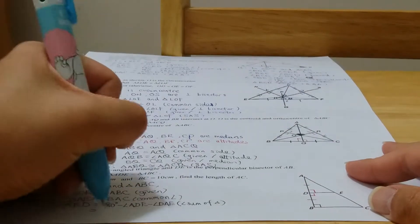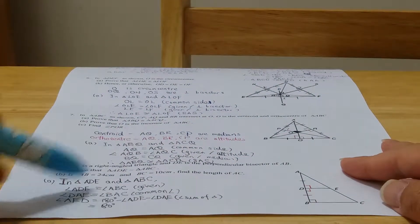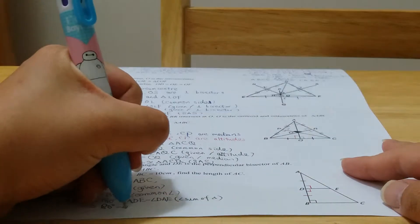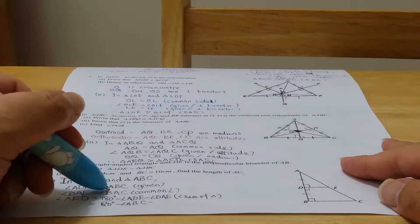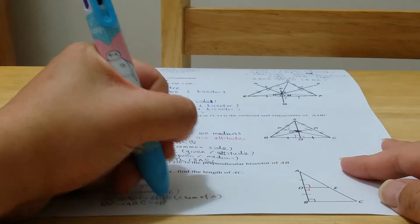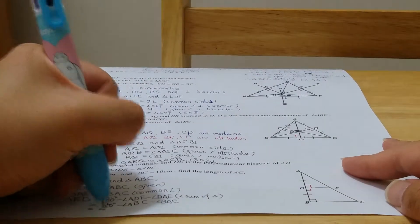Next one we have 180 degrees. Because ADE equals ABC, so I change it to ABC. Because DAE equals to BAC, we change it to BAC. And finally, we get the last one is ACB.